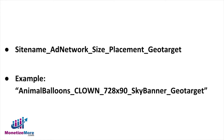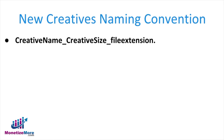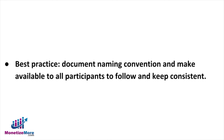Seeing the naming convention in action with our fictitious site and ad network: Animal Balloons_Clown_728x90_Sky Banner_Geotarget. And finally, when it comes to uploading creatives — for which there can be literally hundreds or thousands within a long-time partner's account — we recommend: creative name, underscore creative size, underscore file extension. For example: balloon hat_728x90_swf. Whether you implement our naming convention or create your own, once it's finalized, document it and make it available to all participants to keep consistent.